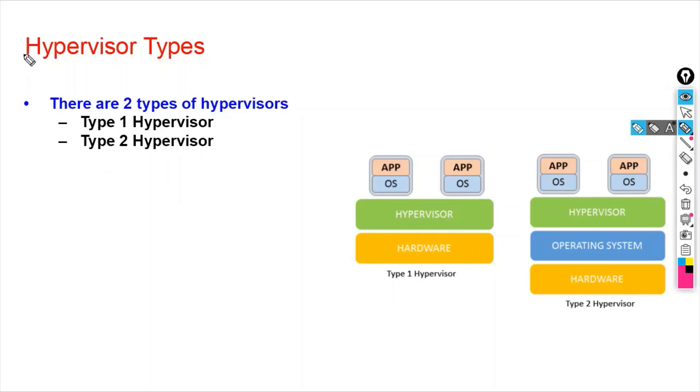In this section, we will see hypervisor types. There are two types of hypervisors: type 1 hypervisor and type 2 hypervisor.